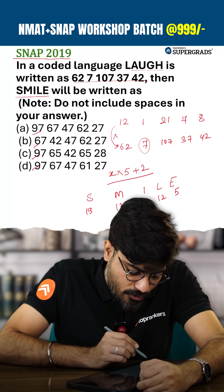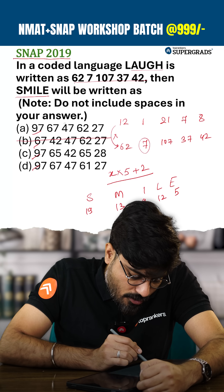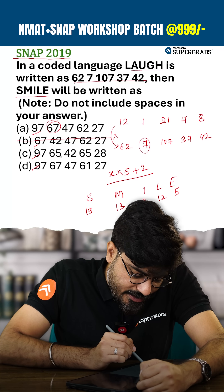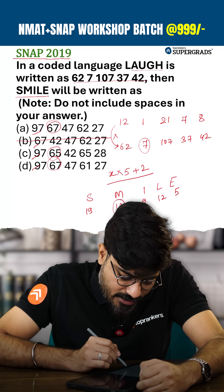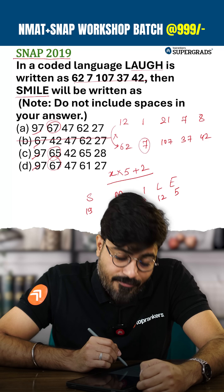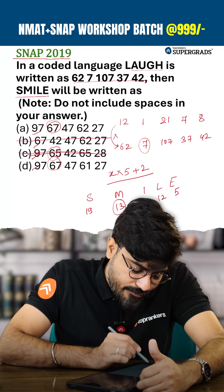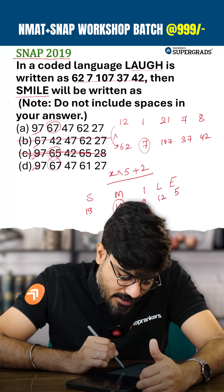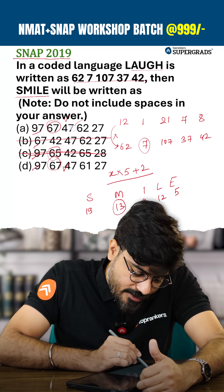19 × 5 = 95, plus 2 = 97, so S gives 97 — that checks out. But M: 13 × 5 = 65, plus 2 = 67. One option shows 65 for M, which is wrong, so that option cannot be the answer. For I: 9 × 5 = 45, plus 2 = 47 — that also matches the remaining options.